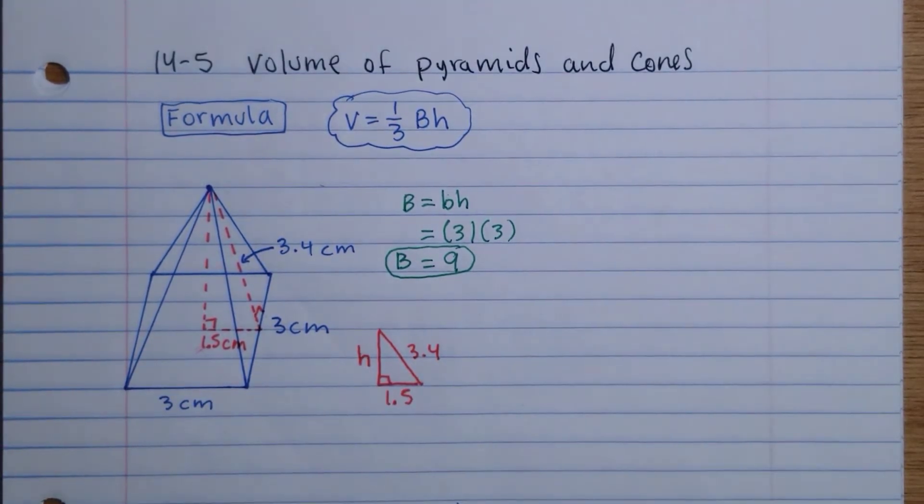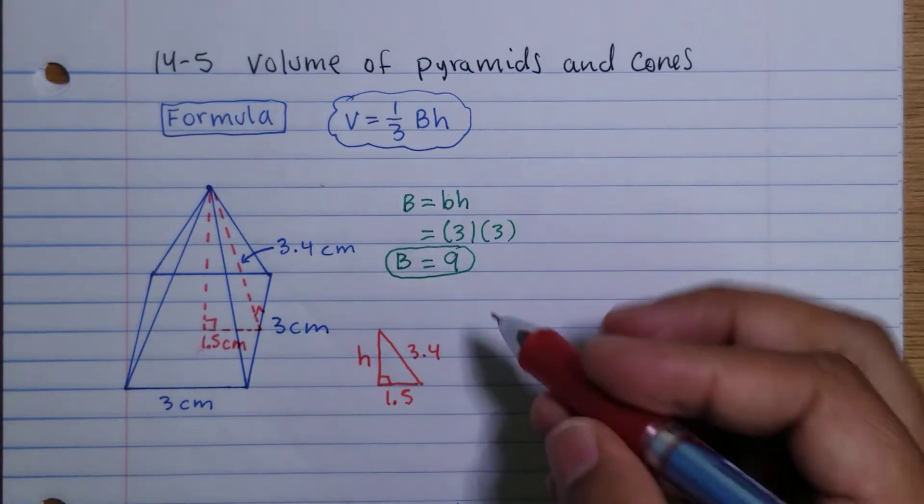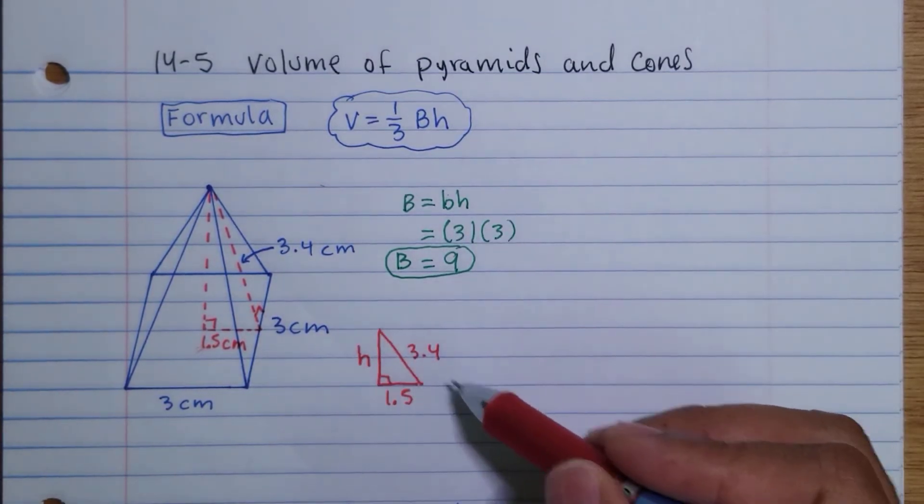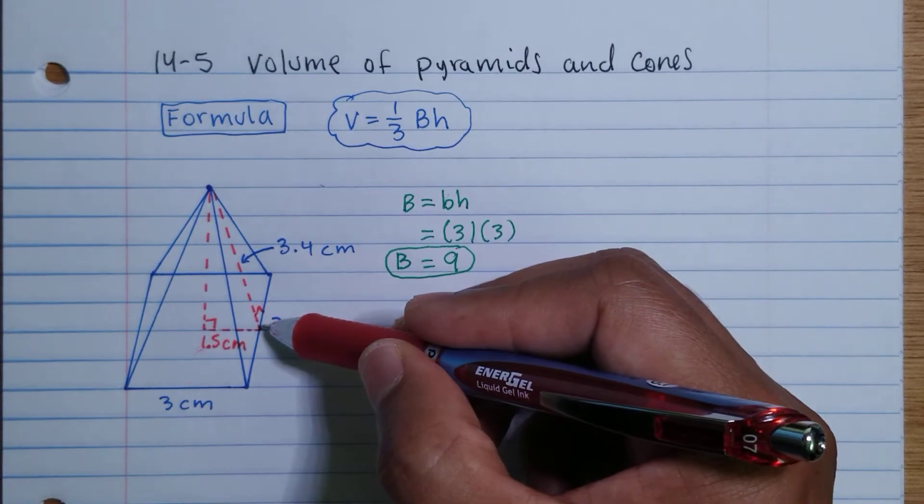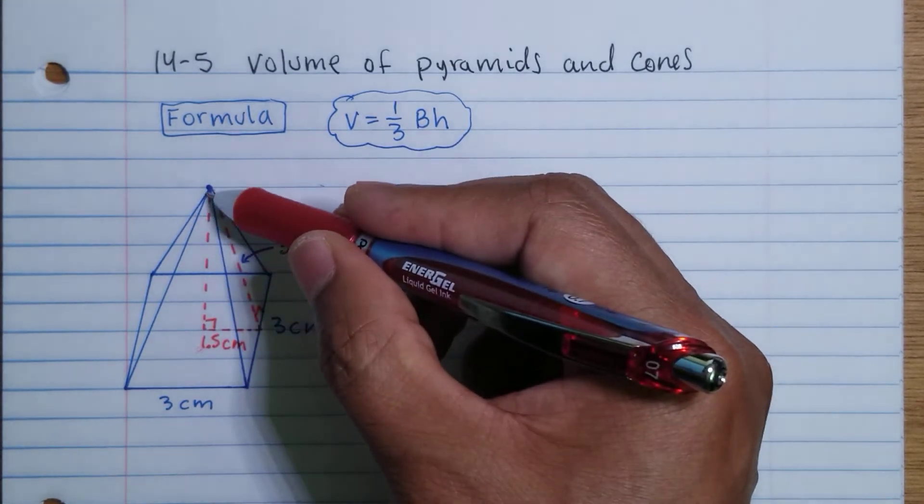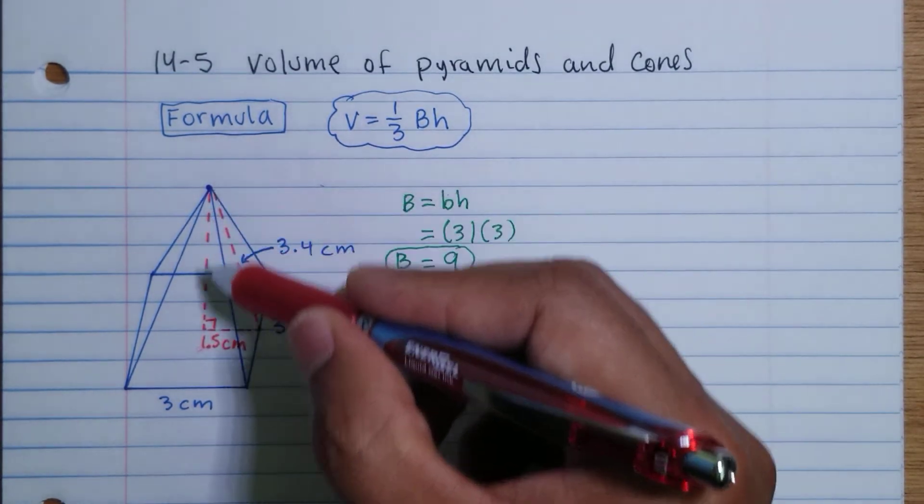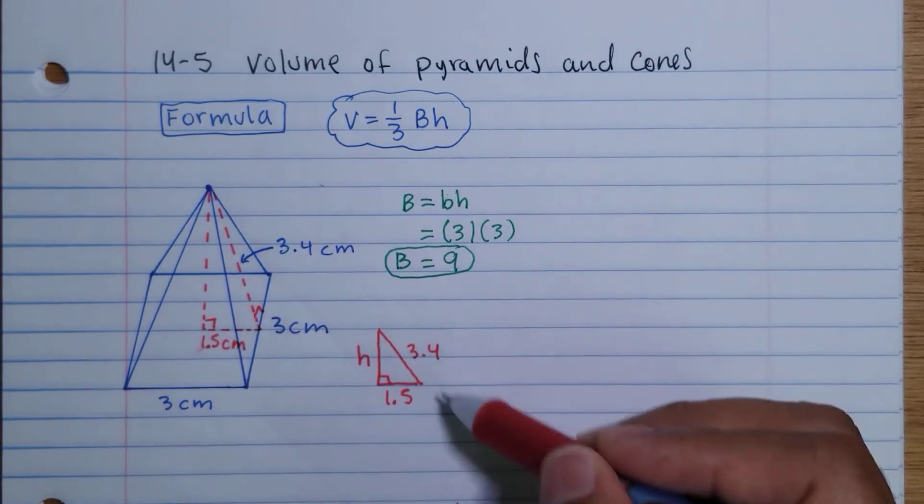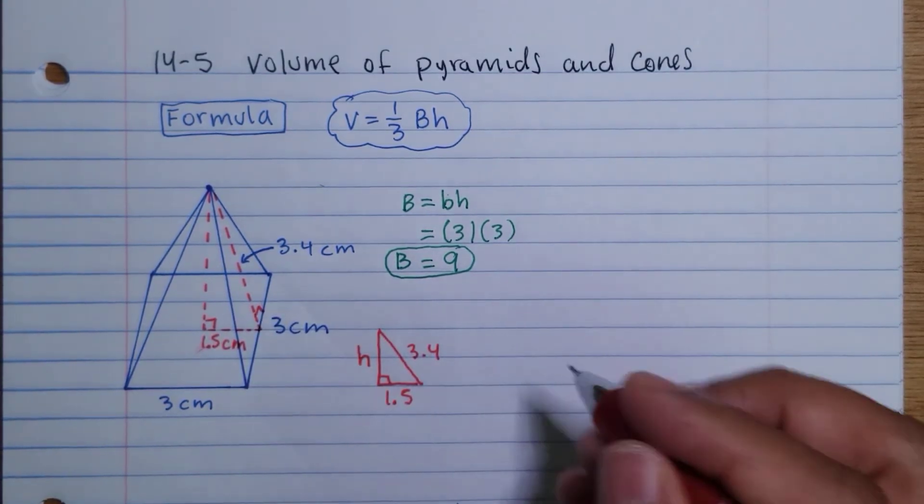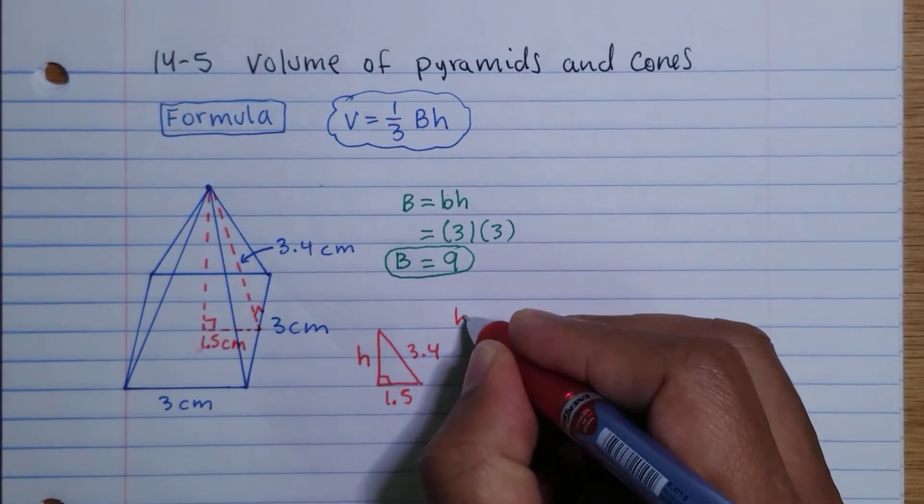Remember I said for volume, in one of the video lessons, for surface area you can use the slant height, but for volume you have to use the interior height. We don't have that in this problem, so we're going to use Pythagorean theorem to help us find it.